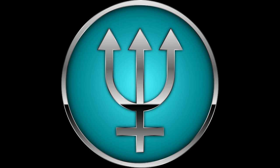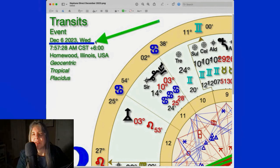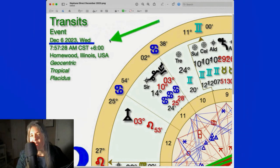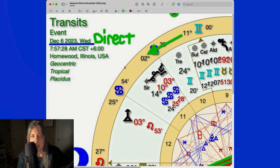Neptune going direct happens soon. You're already feeling it though, because Neptune sits at the same degree and minute for about seven days. Doesn't move. December 6th, 2023 is when the red numbers turn black. So we call that direct. So we got Neptune direct December 6th.